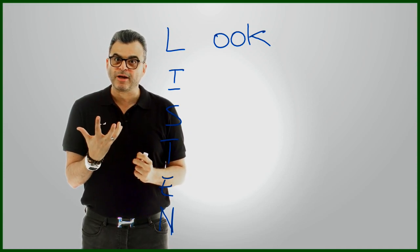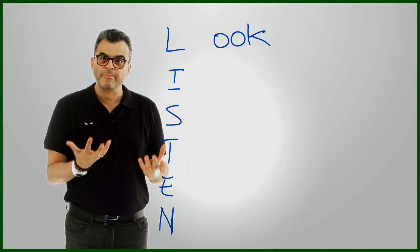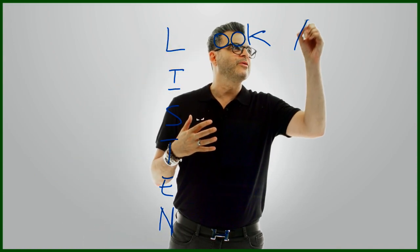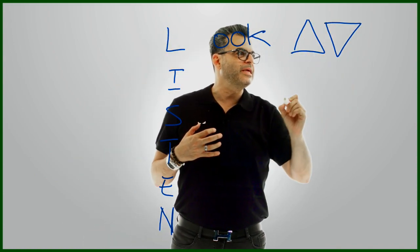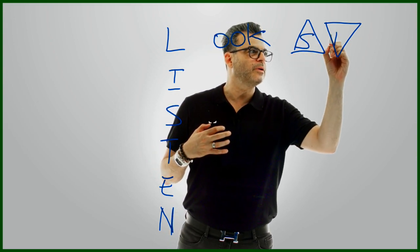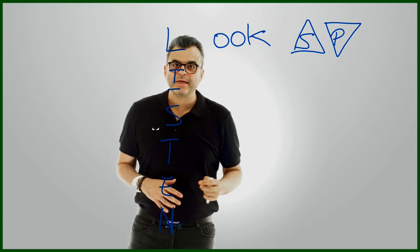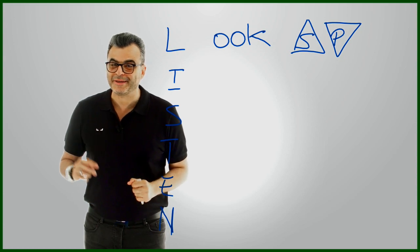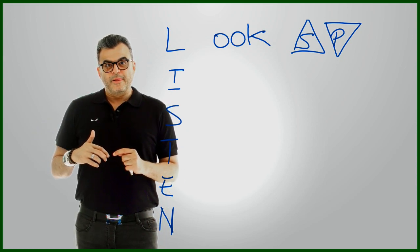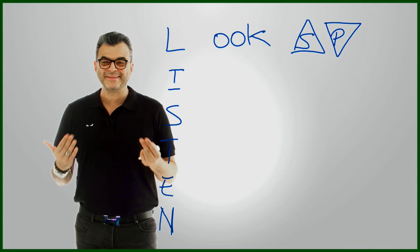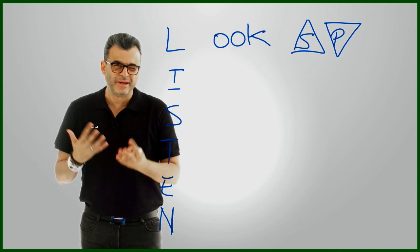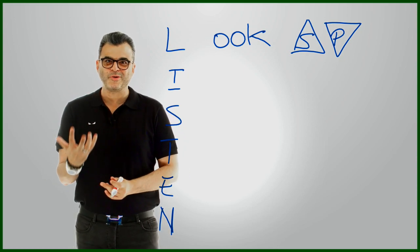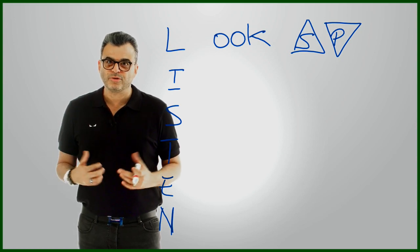But establishing eye contact definitely helps in becoming a better listener. And in my previous videos, I spoke about beware of the S-P triangles. The S-P triangles. What does that mean? The S triangle is the social triangle. Meaning that if you're in a social setting, what we tend to do is if we're attracted to someone, and attraction can come in many different shapes and forms. I could be attracted to the person's style or the sense of humor or their intellect, not necessarily physical attraction all the time.